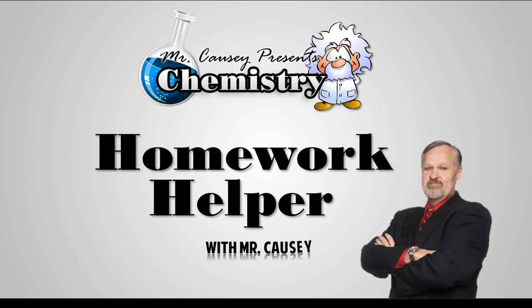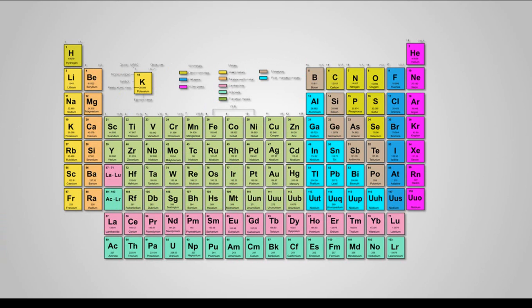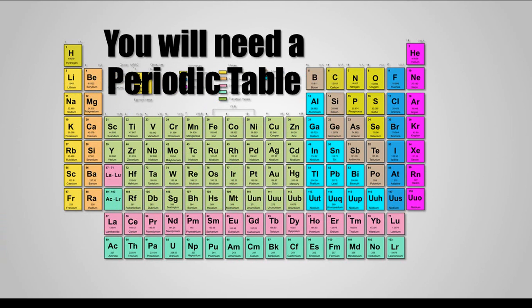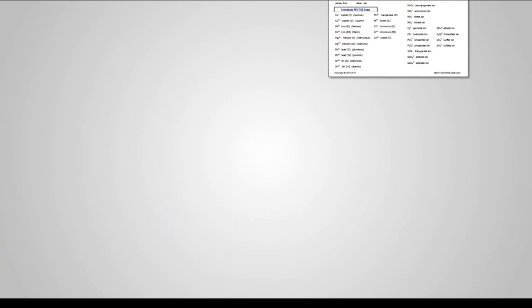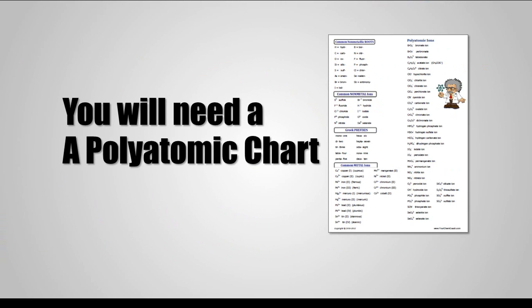Howdy y'all. Mr. Causey here with another lesson in chemistry and today we're gonna do a homework helper. We're gonna do one on naming acids and you're gonna need a periodic table. You're gonna need your polyatomic ion chart and let's get started.